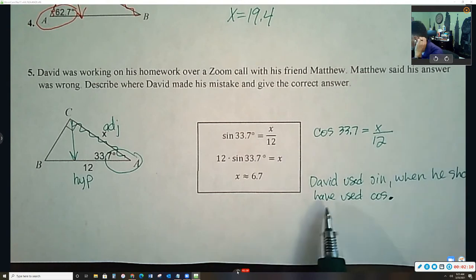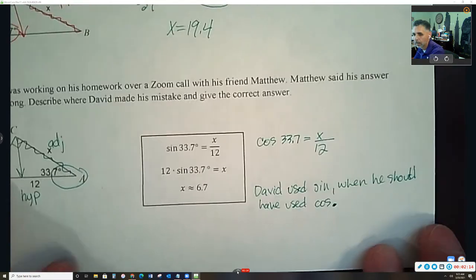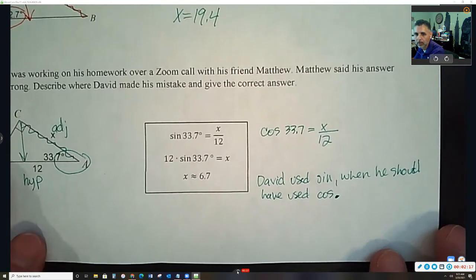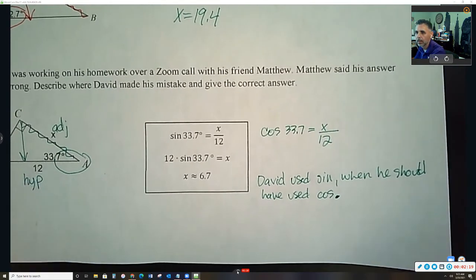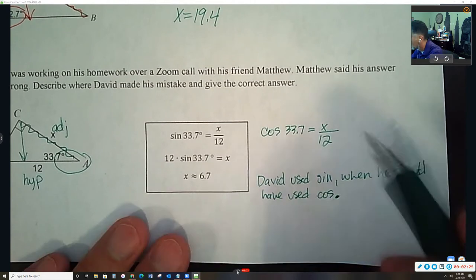It's not just enough to say he used the wrong trig ratio. You have to say which one he used wrong and which one should he have used. And then we can solve this.